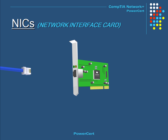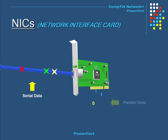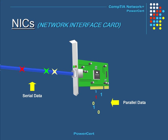A network interface card, or NIC, is used to connect a computer to a network. It is basically a circuit board with a network adapter installed on your computer. Its job is to convert incoming serial data into parallel data so the computer can understand it. A NIC provides a constant dedicated connection to a network, and every NIC has its own unique identifier called a MAC address.